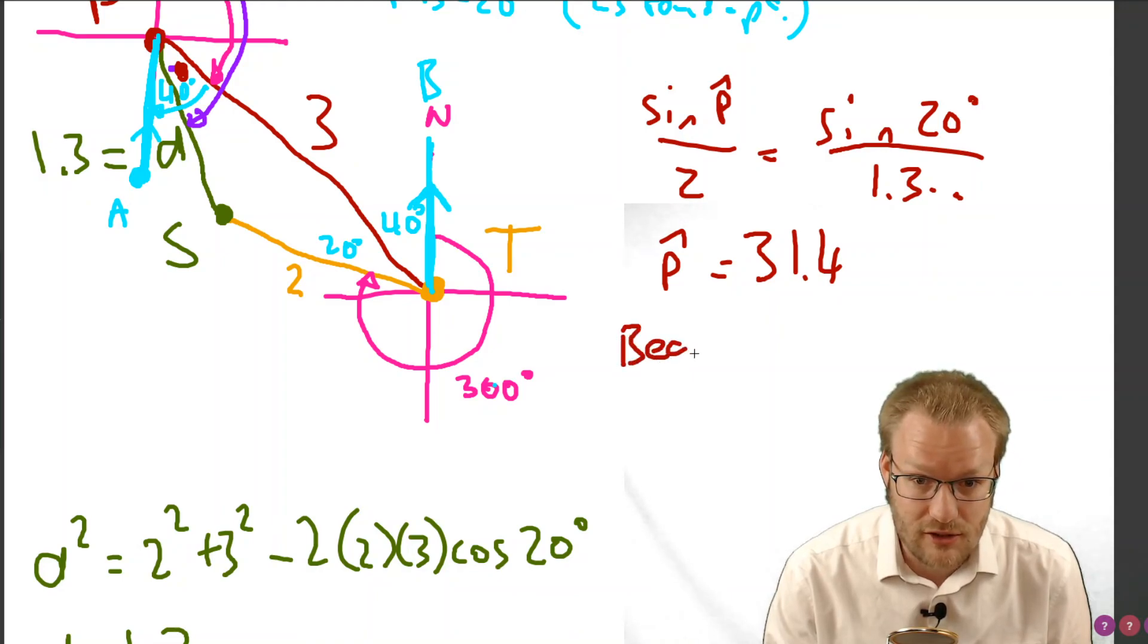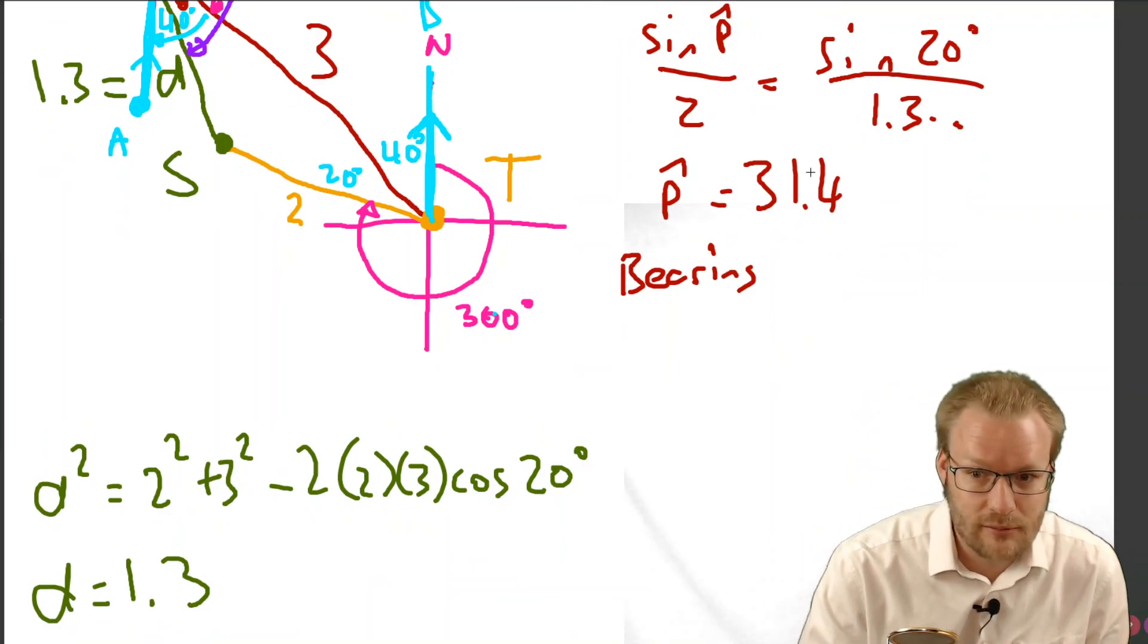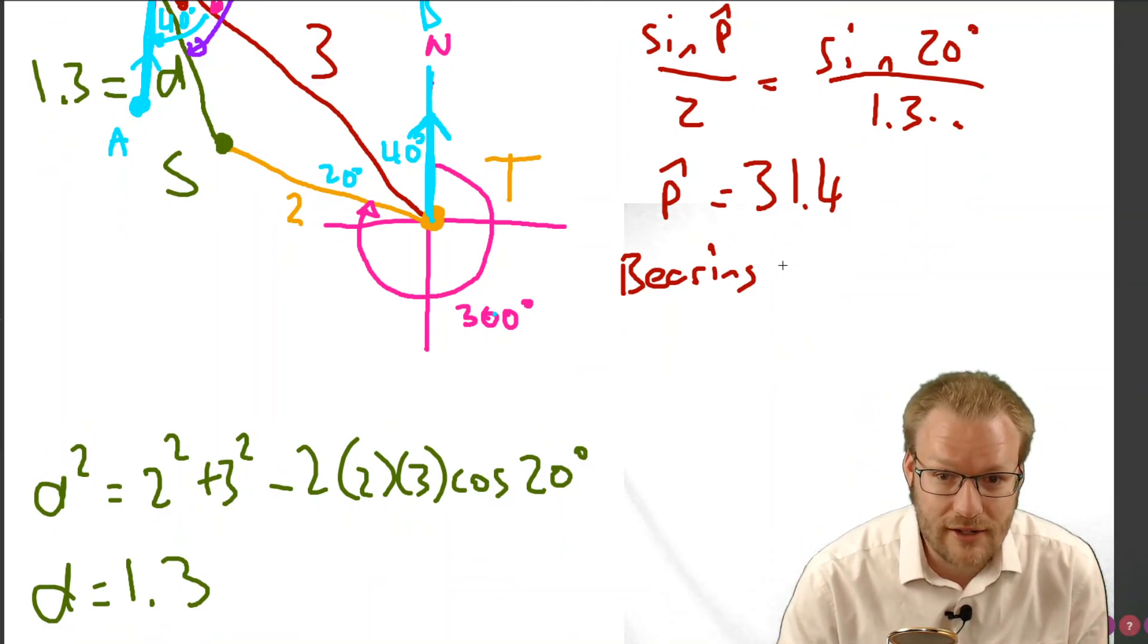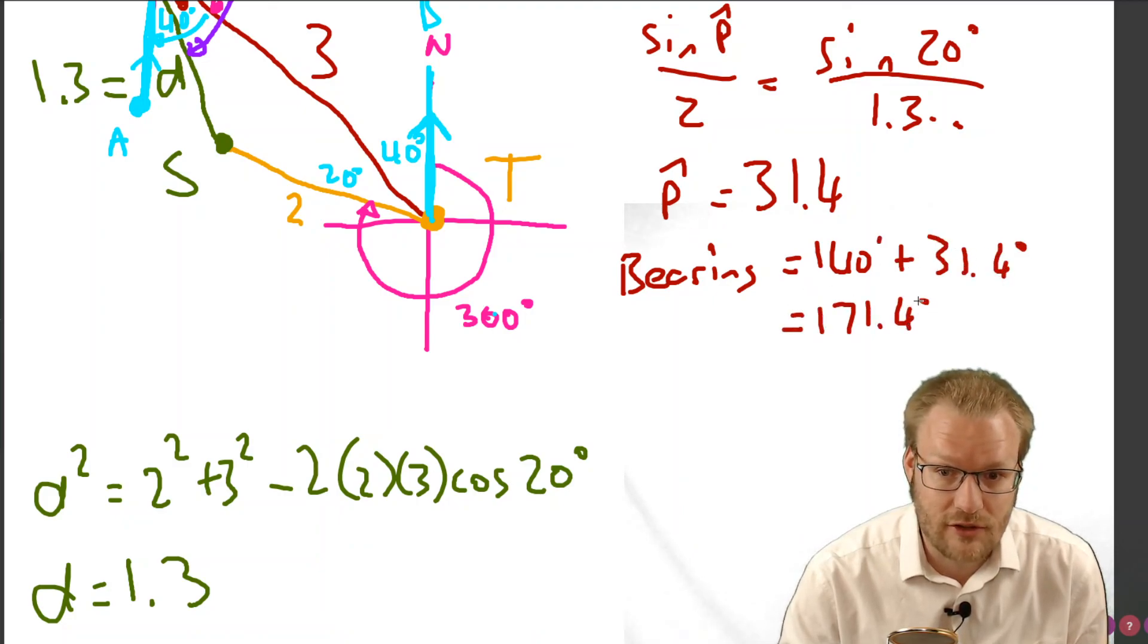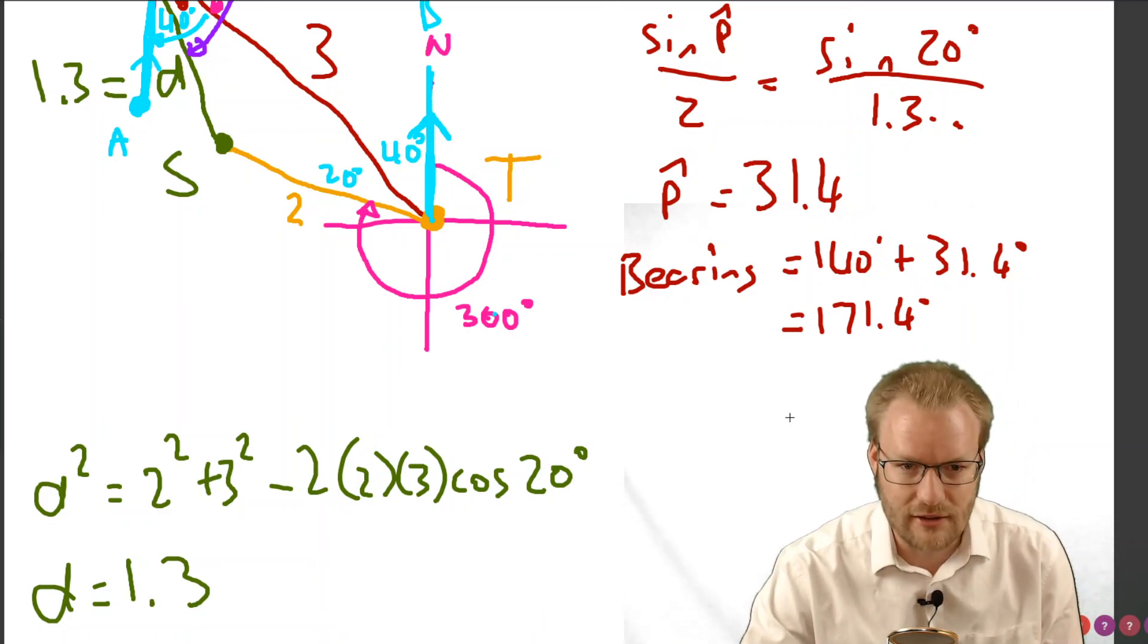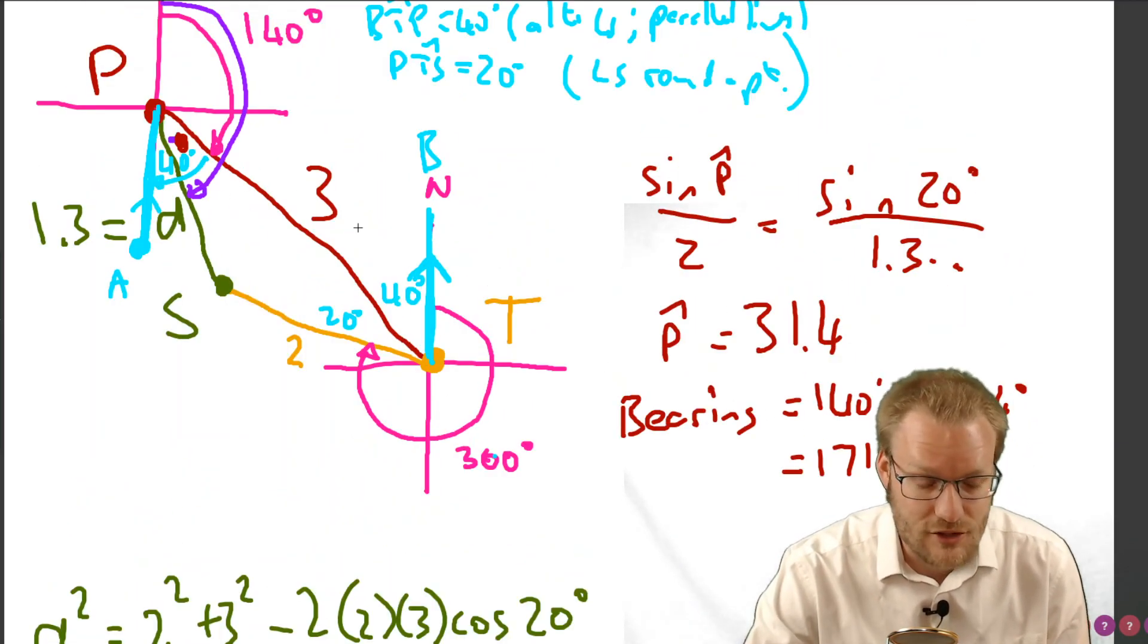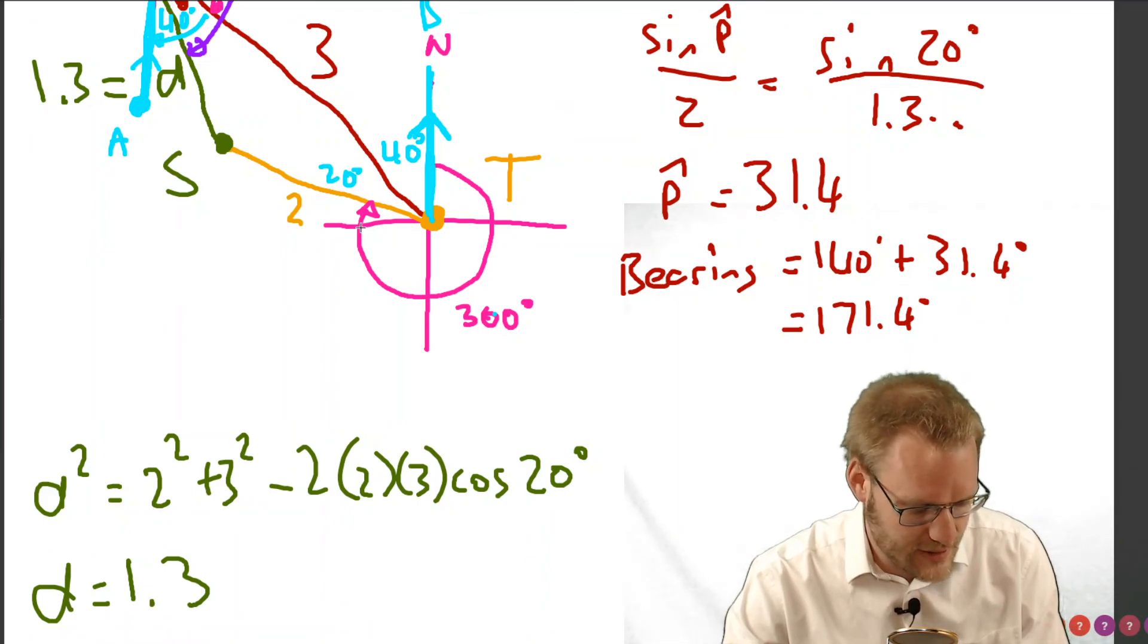There we go, 31.4. So this angle here is 31.4, so that bearing is what it wanted. The bearing is 140 plus 31.4, gives us 171.4 degrees. So that's our bearing, not just what's that angle in the triangle.